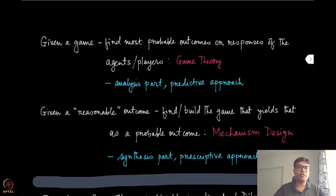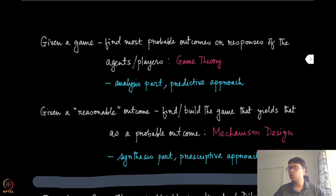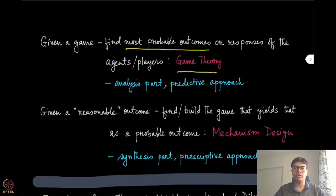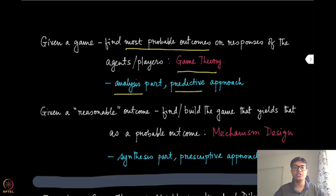In the game theory part, which is the first part of this course, we start with a given game and try to find what is the most probable outcome — or outcomes — of that game, which will depend on the responses of these agents or players. This is the analysis component, and the guarantee we give here is essentially predictive: we are predicting what is going to happen in this game.